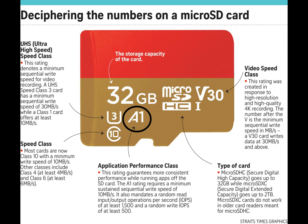An A1 rating requires a minimum sequential speed of 10 MB/s. Next, HC denotes the type of card — this is the micro SDHC (Secure Digital High Capacity), which goes up to 32 gigs. For example, a micro SDXC (Secure Digital Extended Capacity) goes up to 2 terabytes. Most SDXC cards do not work in older card readers meant for micro SDHC.